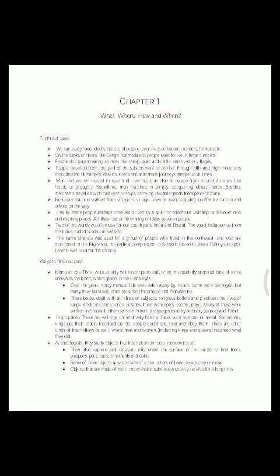Chapter 1 is 'What, Where, How and When.' From our past we can study food, clothes, and houses of people, even the lives of hunters, herders, and farmers. People lived in large numbers on the banks of rivers like the Ganga and Narmada. They began rearing animals like sheep, goat, and cattle and lived in villages. People also traveled through hills, high mountains including the Himalayas, deserts, rivers, and seas, which made journeys dangerous at times.